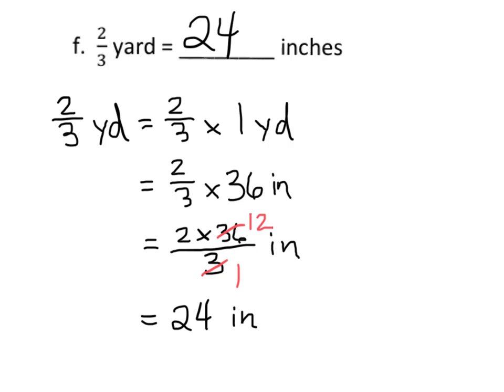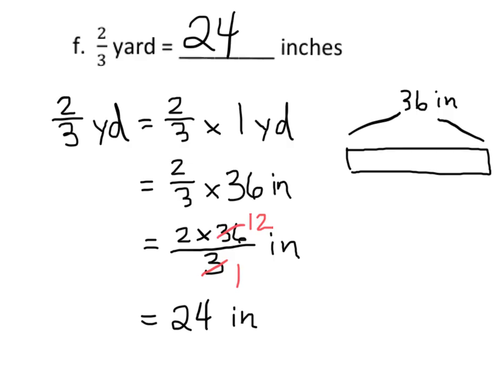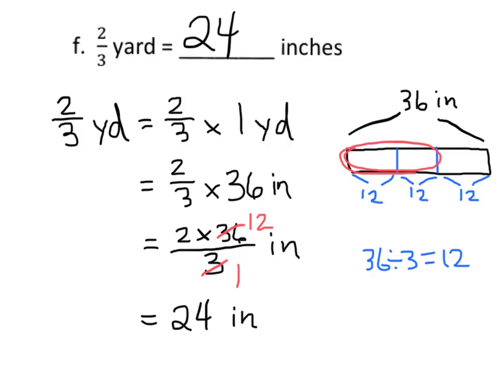Now let's see what that looks like in the tape diagram. We take one yard, which equals thirty-six inches. Because the fraction is two-thirds of a yard, we chop it into three equal pieces. Since thirty-six divided by three equals twelve, each piece is twelve inches. Two-thirds means two out of three pieces: twelve times two is twenty-four. So that's the way to draw the picture of it.